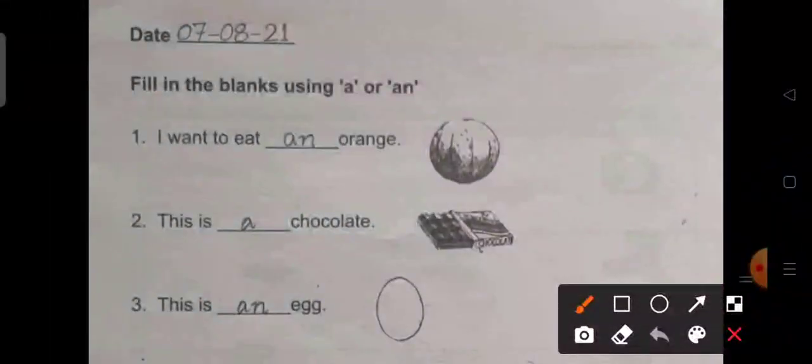Now, let us do page number 44 of our Helping Young Minds Grow workbook. Write date 7th August 2021. Fill in the blanks using a or an.